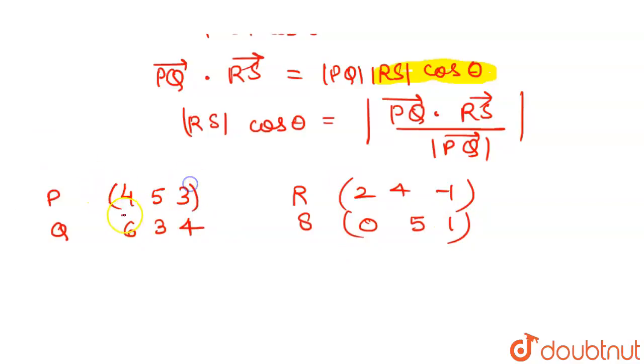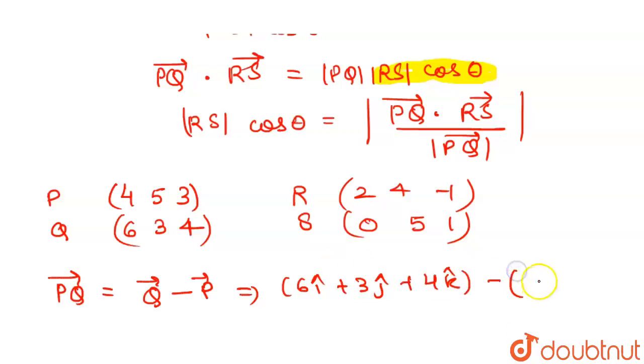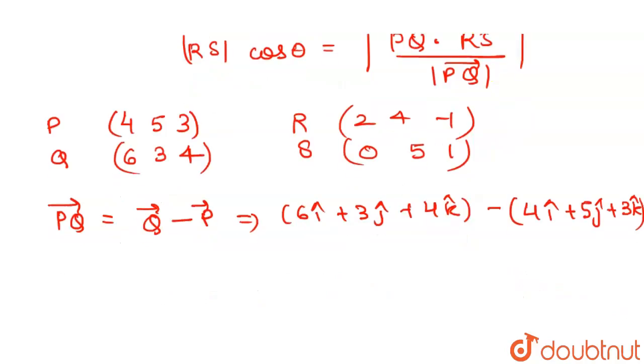To find PQ, subtract the starting from the final vector, that means Q minus P. Position vector of Q is (6, 3, 4), so we write 6i + 3j + 4k minus P which is (4, 5, 3), so 4i + 5j + 3k.